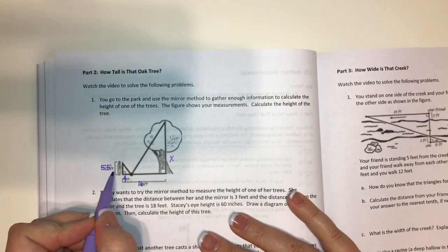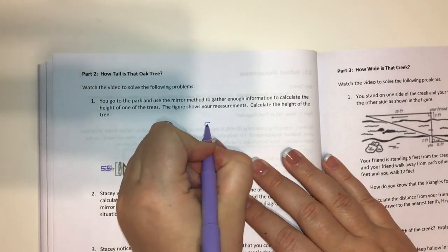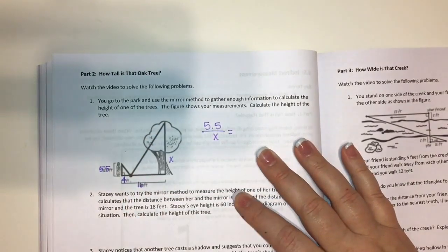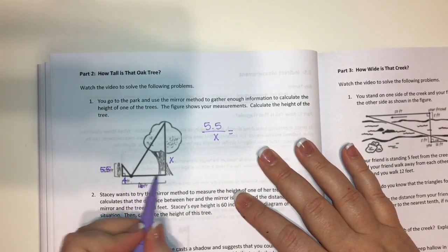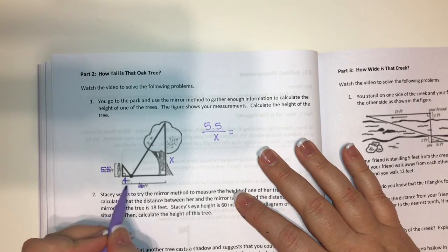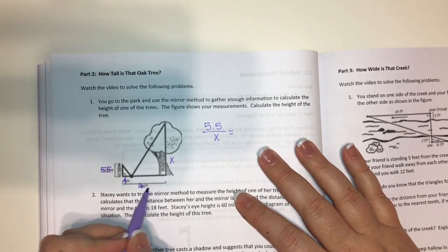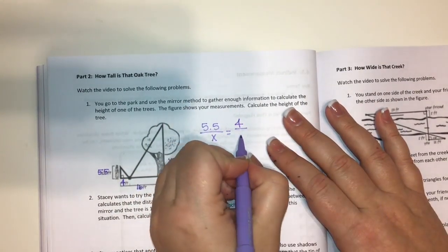So the height of you, the person, would correspond to the height of the tree. So I'm going to do 5.5 over X. And then the your distance from the mirror corresponds with the tree's distance from the mirror. Now I need to make sure and you keep your information on top, the person's information on top and the tree's information on the bottom. So that's going to equal 4 over 16.